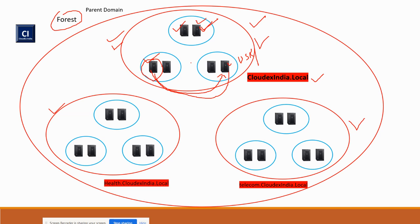Always remember: if there are two sites or you have designed firewall rules, make sure all domain controllers are communicating to the RID master to get the pool. Otherwise, there will be problems creating user objects, joining systems to the domain, or creating groups. RID master is a domain-wide role, meaning each domain can have its own RID master. Under each domain, one domain controller holds this role. They have their own independent RID pool values — the values are always different and unique across all domains.